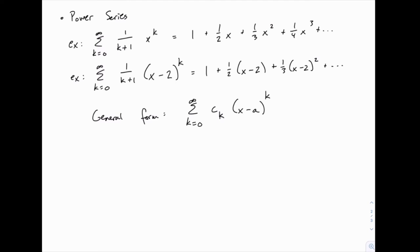The general form for a power series, starting at k equals 0, is the sum of coefficients c sub k times x minus a raised to the power of k. In the first example with just x to the k, the coefficients c sub k were 1 and a was 0. In the second example the coefficients are 1 over k plus 1 and a is 0, and in the third example the coefficients are 1 over k plus 1 and a is 2. This general form also applies to Taylor and Maclaurin series.